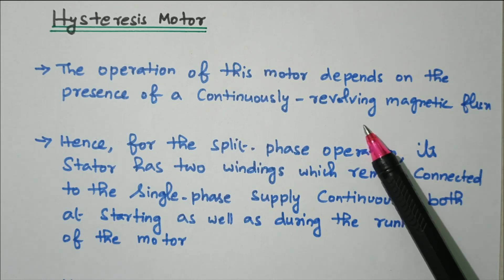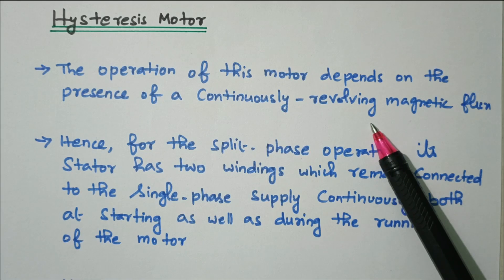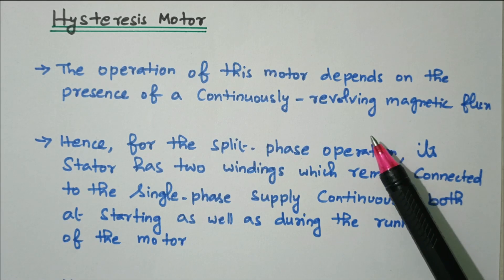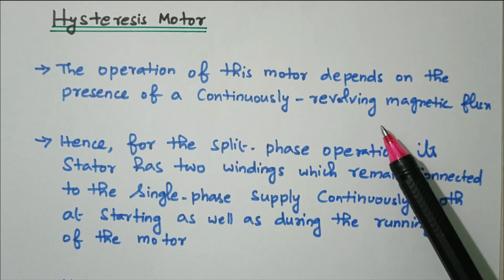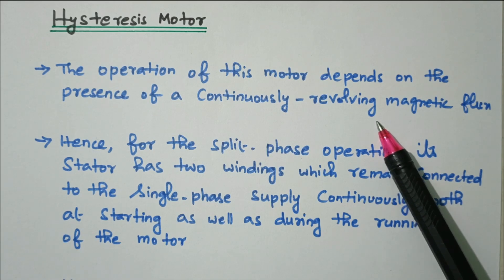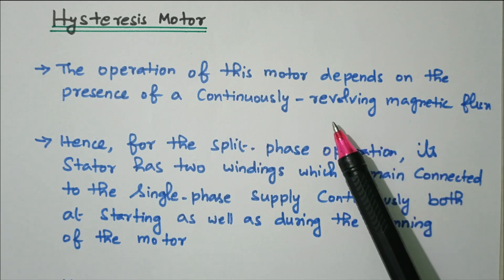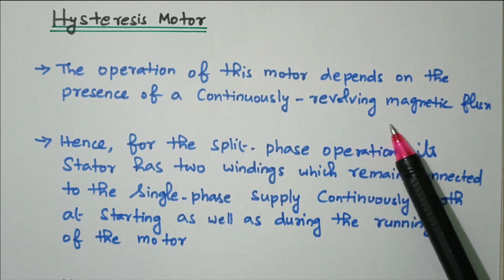So what we need to do — minimum two phases should be there. In the case of a three-phase motor, three phases are displaced by 120 degrees, so there is always a revolving magnetic field. In the case of a single-phase winding, the net flux is zero, so we use two phases with a 90-degree phase difference so that a revolving magnetic field is created.